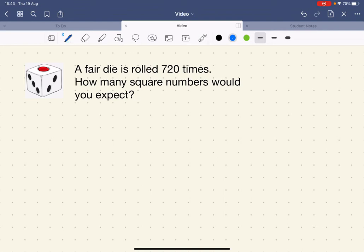Here we're going to look at expectation. You can read the question: a fair die is rolled 720 times, how many square numbers would you expect? This isn't a probability question, it's about expectation. How many would you expect?